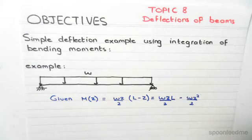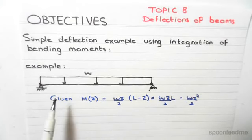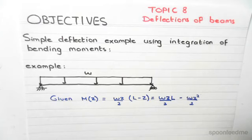The following is an example of deflections on a simply supported beam. Very nice and easy. As you can see, the simply supported beam has a UDL and the loading function is W.